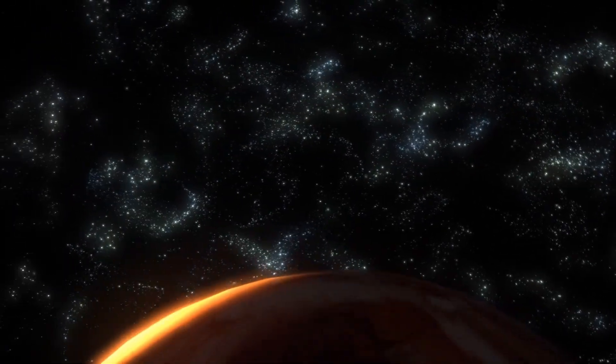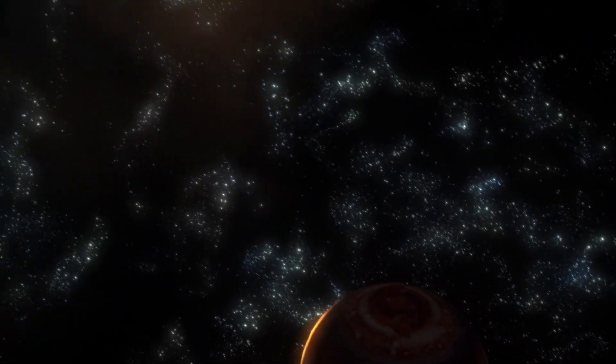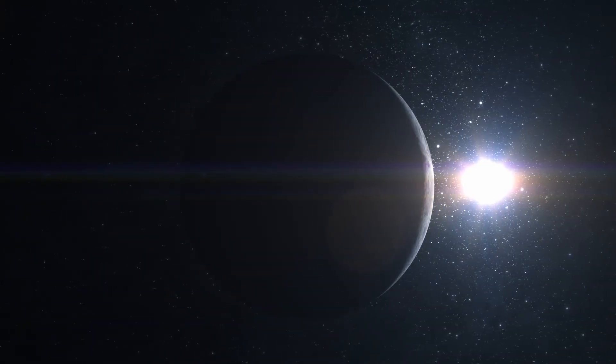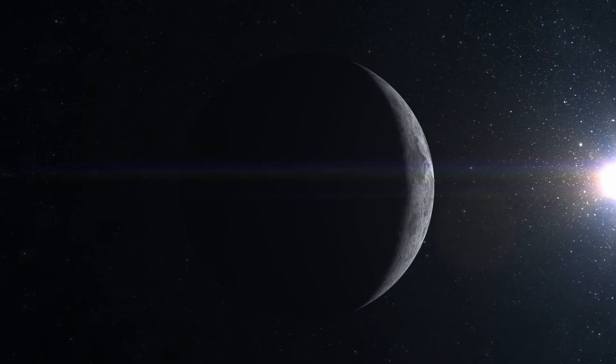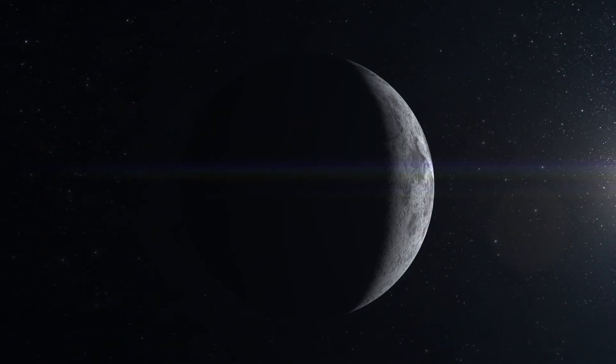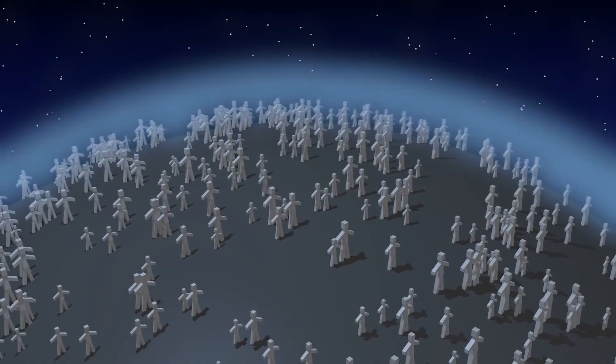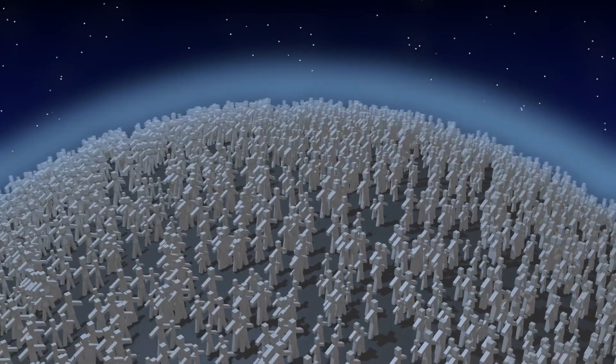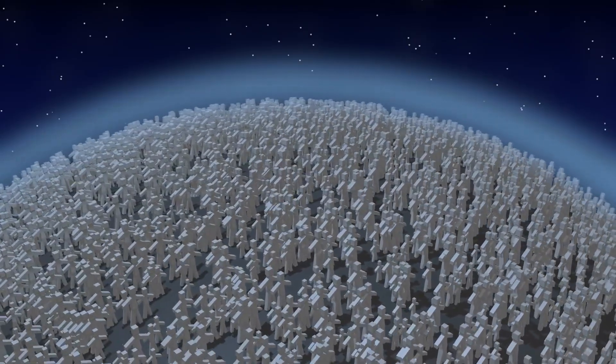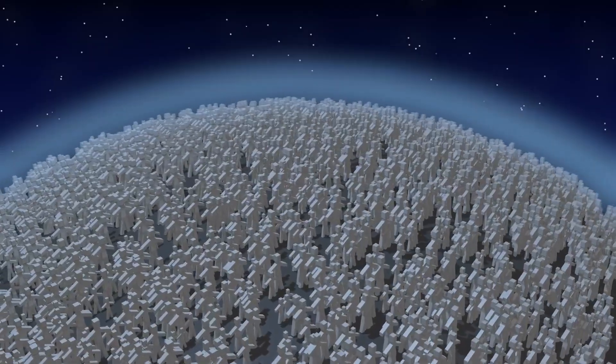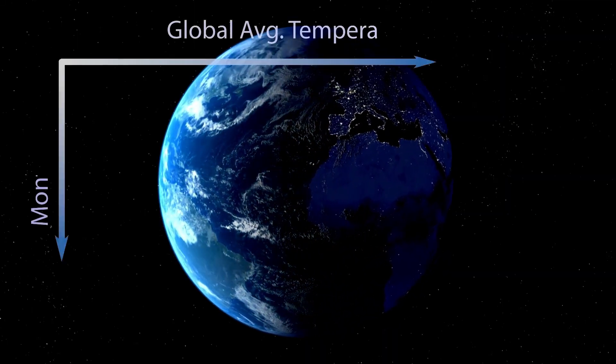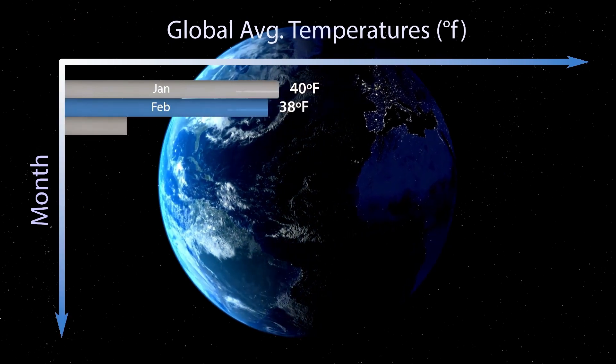Since its launch in late 2021, the James Webb Space Telescope has completely transformed our understanding of the universe. It was designed to extend our reach into the cosmos, to see farther and with more clarity than any instrument before it. But now, something has changed. The most powerful telescope humanity has ever built has just captured something so extraordinary, so unexplainable, that leading scientists are calling it a crisis in physics. These are not just remarkable discoveries, they're unsettling.